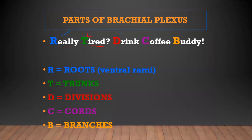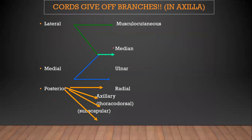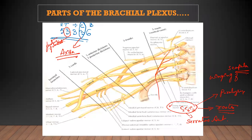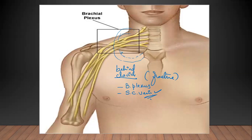The brachial plexus is located right behind the clavicle and above the first rib. Whenever there is a fracture of the clavicle, the first things to get damaged are the brachial plexus and the subclavian vein, because the vein is present very superficially. This is a very good USMLE question.